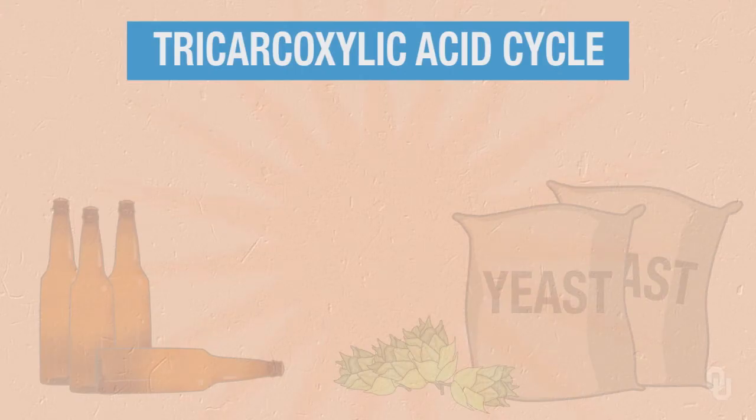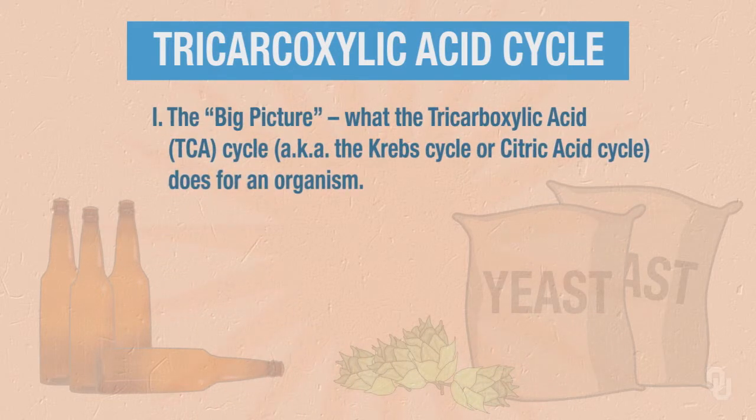Welcome to this next segment of the Chemistry of Beer. Our topic for this segment is the tricarboxylic acid cycle, or mercifully abbreviated, the TCA cycle. It's also called the Krebs cycle or the citric acid cycle.